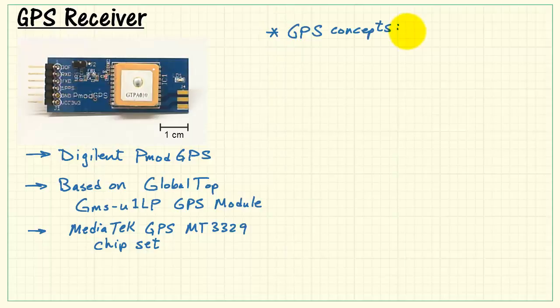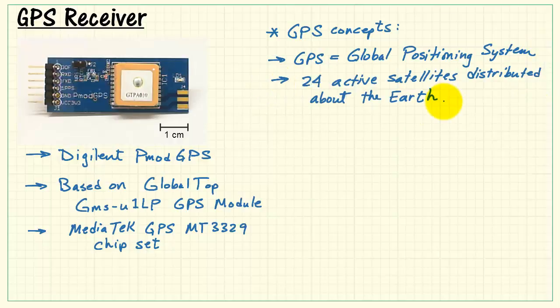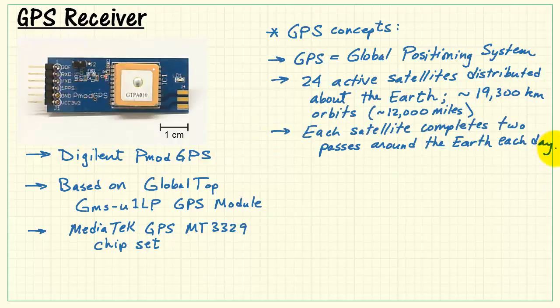Let's begin with a quick overview of general GPS concepts. This is an acronym that stands for Global Positioning System, and this system has 24 active satellites distributed equally about the Earth at orbits of about 19,000 kilometers.